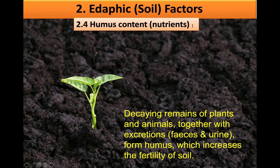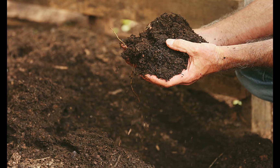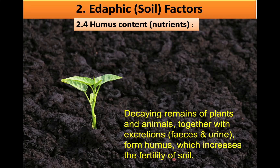Now let's look at the humus content of soil. Humus is decayed plant and animal matter — the decaying remains of plants and animals together with excretions such as faeces and urine form humus. This is important because it increases the fertility of the soil, and it also helps with the water retention or water holding capacity of the soil. The more humus added to soil, the greater the water holding capacity.